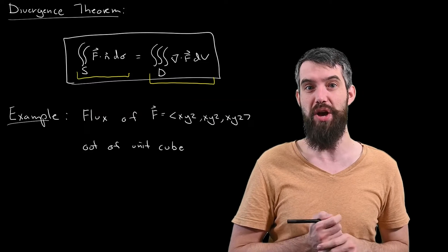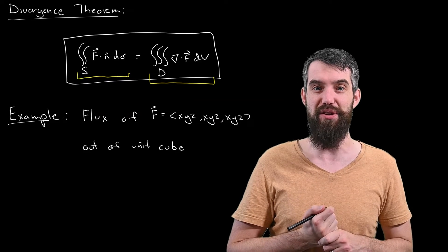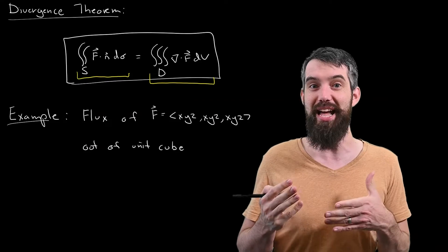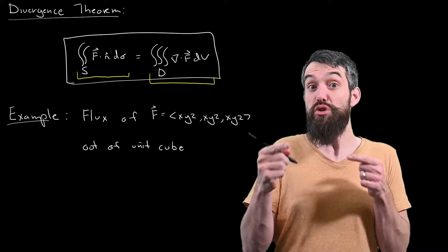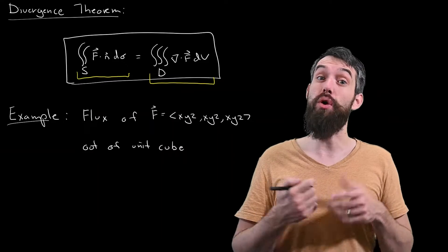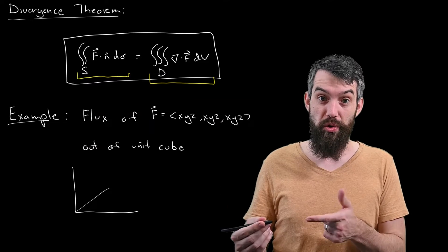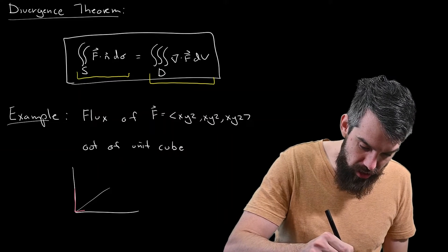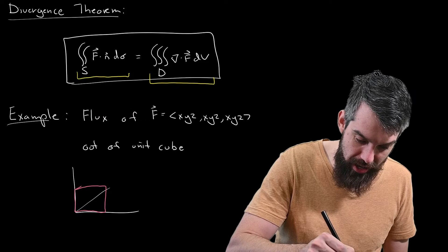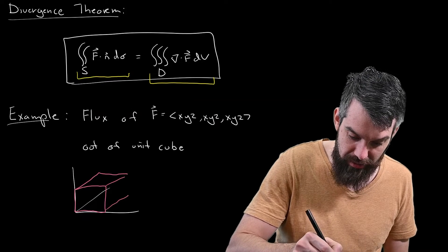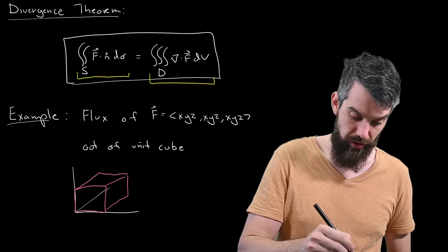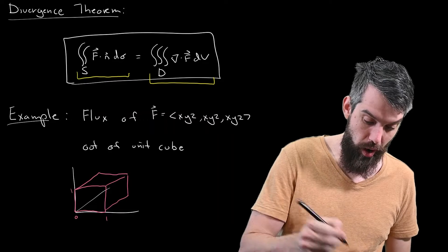So in the specific example we've talked about, I have some field here. The field has components x, y, z in each of the three components, and then I'm trying to figure out what is the outward flux across the unit cube. So drawing my axes, what I mean by the unit cube is that it is a cube going from 0 to 1 in all three axes. Something like that. So this is 0 and 1 and 1 and so forth.